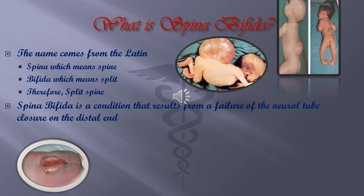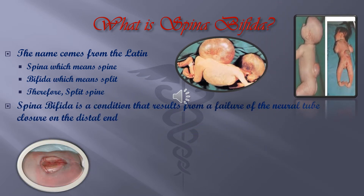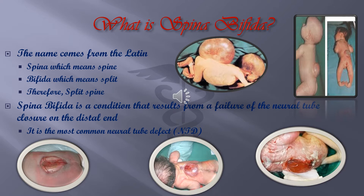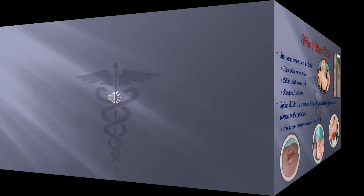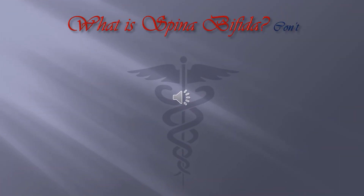Spina Bifida is a condition that results from a failure of the neural tube to close at its distal end. It is the most common neural tube defect, also known as NTD, in pregnancies. The spinal cord fails to form properly during the first month of pregnancy.